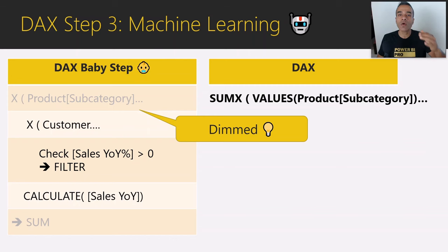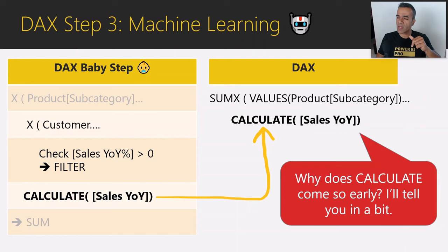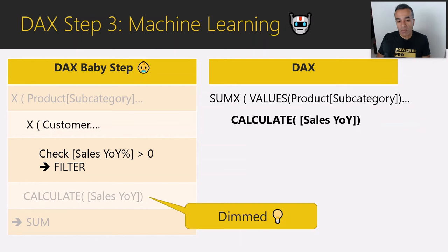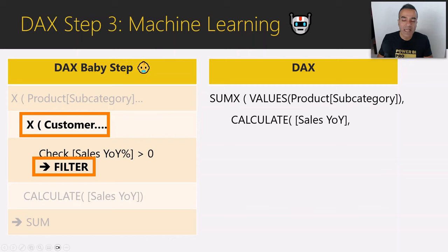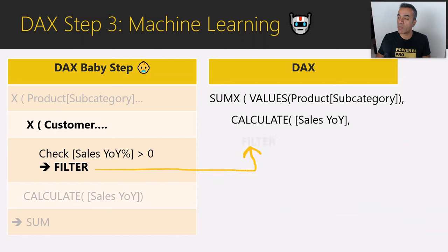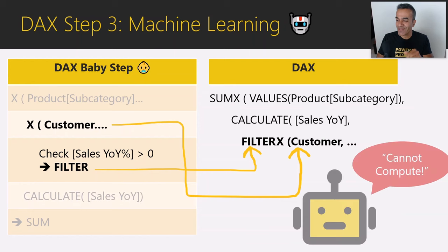We've translated the human baby speak to Power BI speak for the first part. Now let's focus on the next piece — CALCULATE. It's supposed to happen in the end, but we're moving it up. We'll come back and talk more about CALCULATE — it's one of the most fascinating functions. Next: 'go row by row, and in the end filter' — that's the classic X function pattern, so this will be FILTERX. We write FILTER first even though it happens in the end, then X comes after. But if you try FILTERX with Power BI, it won't work.